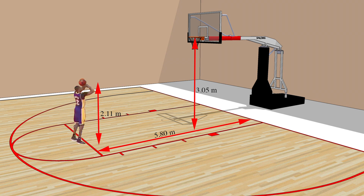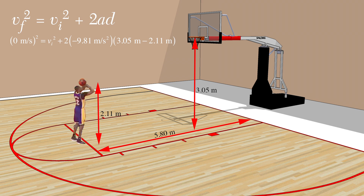In order to determine the perfect shot for Dwight Howard, we must find the initial velocity in the vertical direction of the ball. Let's use the last equation first. We can plug in what we know to find out what we don't know. After solving, we get the conclusion that the initial vertical velocity equals 4.29 meters per second.